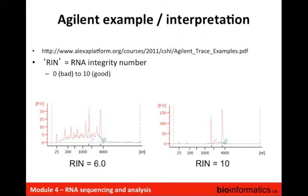Shown here is an example of an RNA analyzed with very high quality from a cell line — the 18S and 28S peaks. Instead of running a gel, you're running the sample through a capillary and every time you get a band on your gel you get a peak instead. On the x-axis you have time, on the y-axis you have fluorescence units, and because you've run a ladder with known sizes of fragments you can convert time into nucleotide sizes. The software assigns an RNA integrity number or RIN — a perfect score is 10 and a very bad score would be 0.